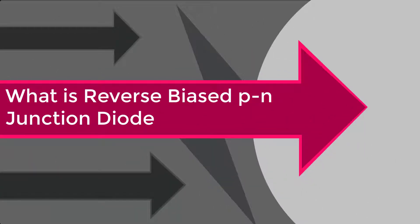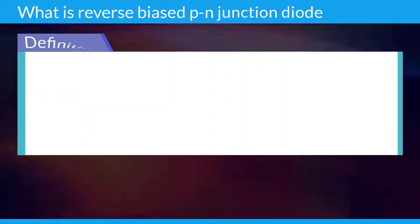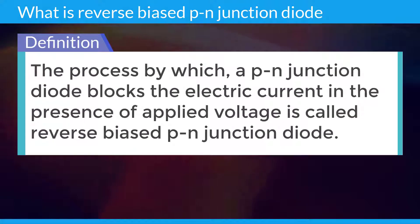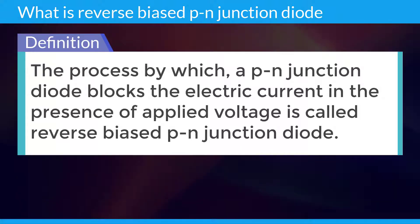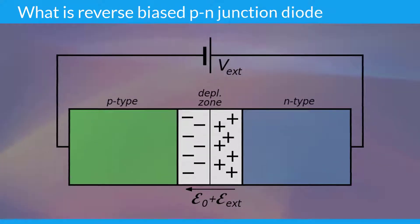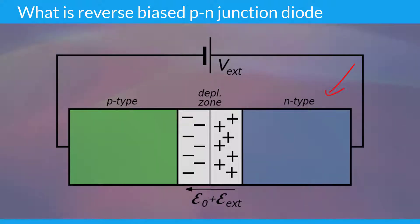What is Reverse Biased PN Junction Diode? The process by which a PN Junction Diode blocks the electric current in the presence of applied voltage is called Reverse Biased PN Junction Diode. In Reverse Biased PN Junction Diode, the positive terminal of the battery is connected to the N type semiconductor material and the negative terminal of the battery is connected to the P type semiconductor material.